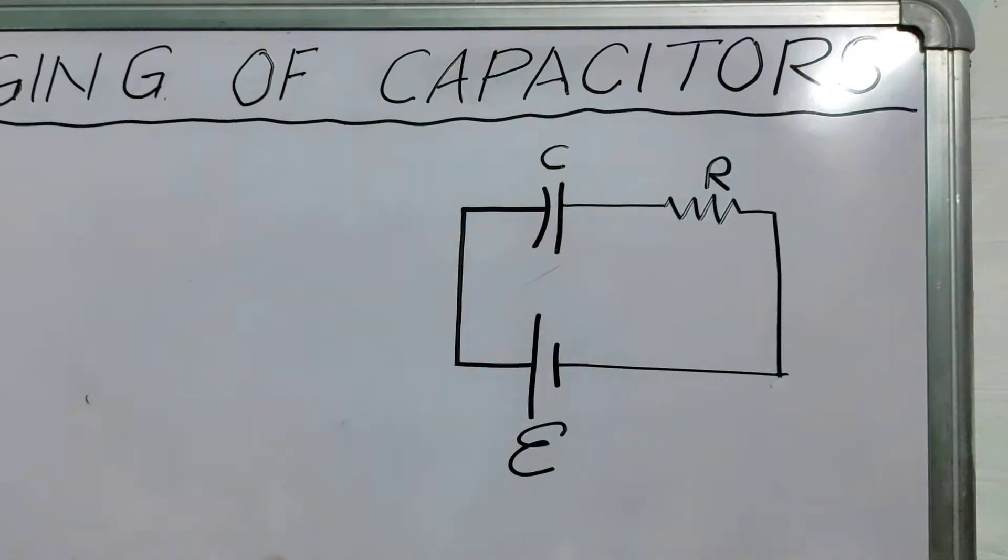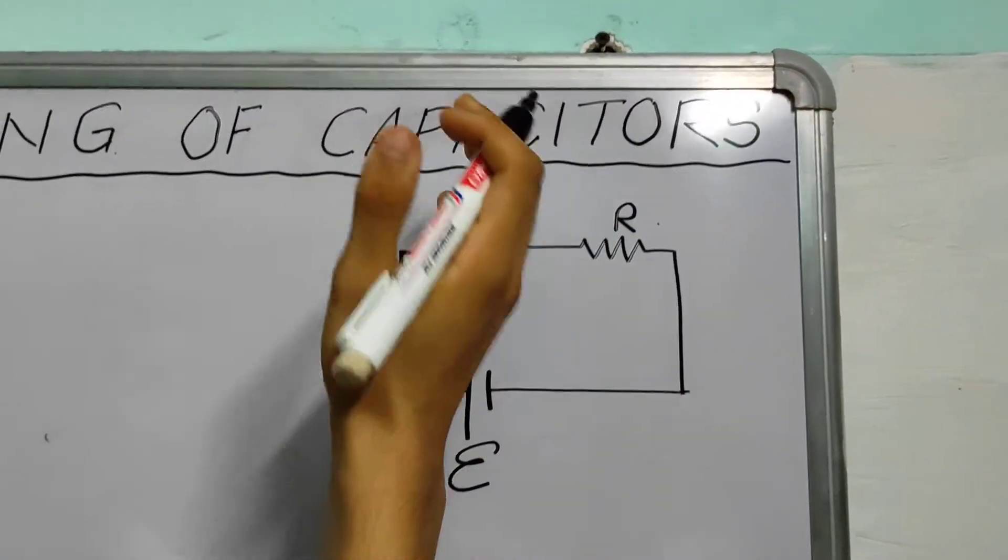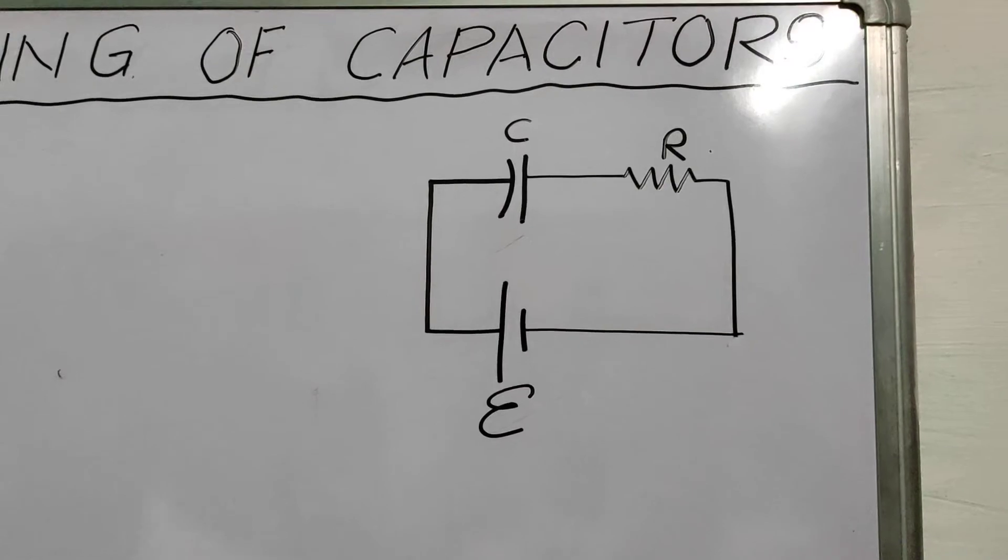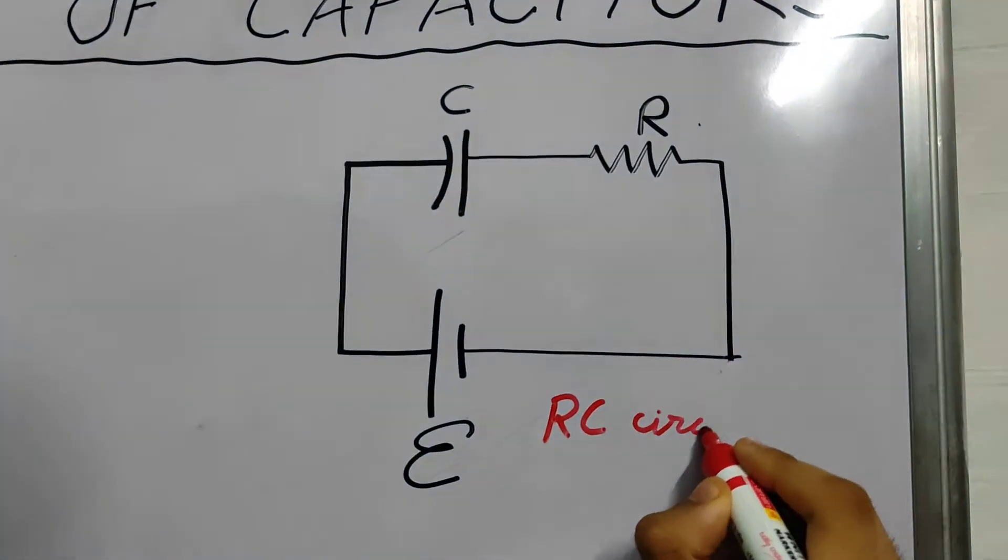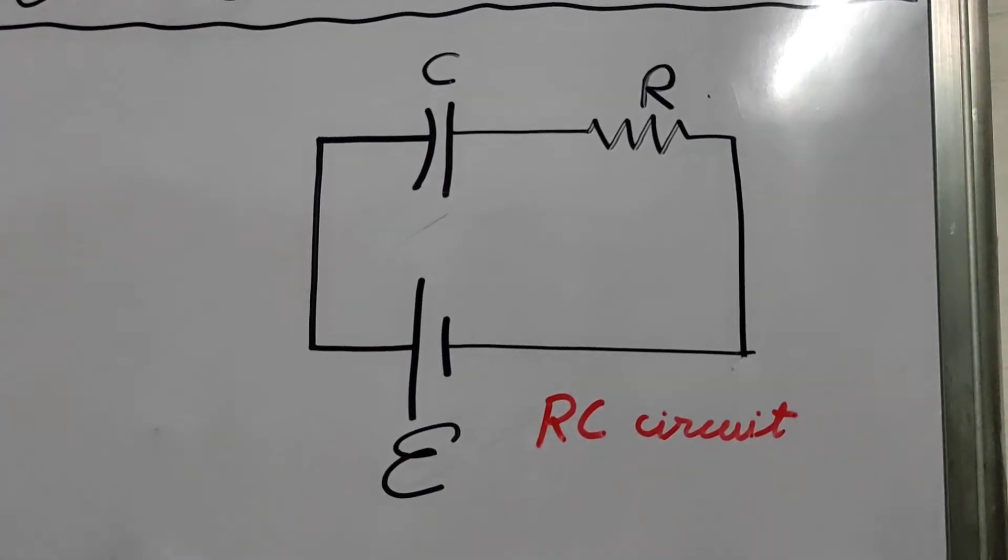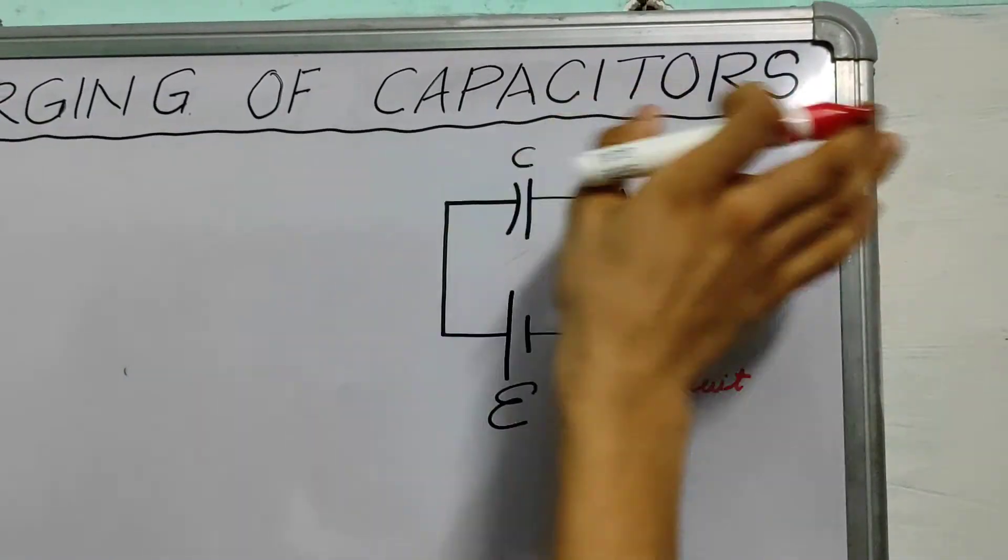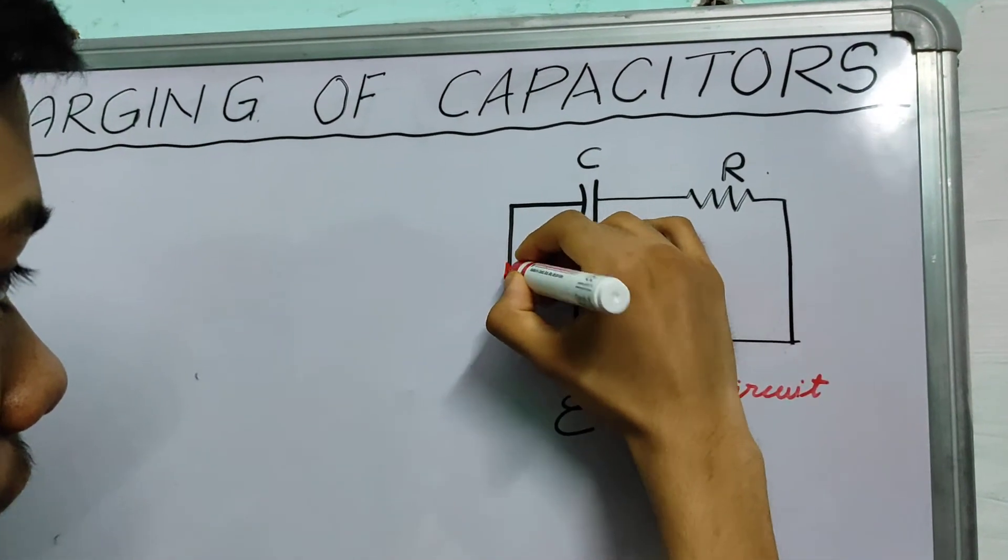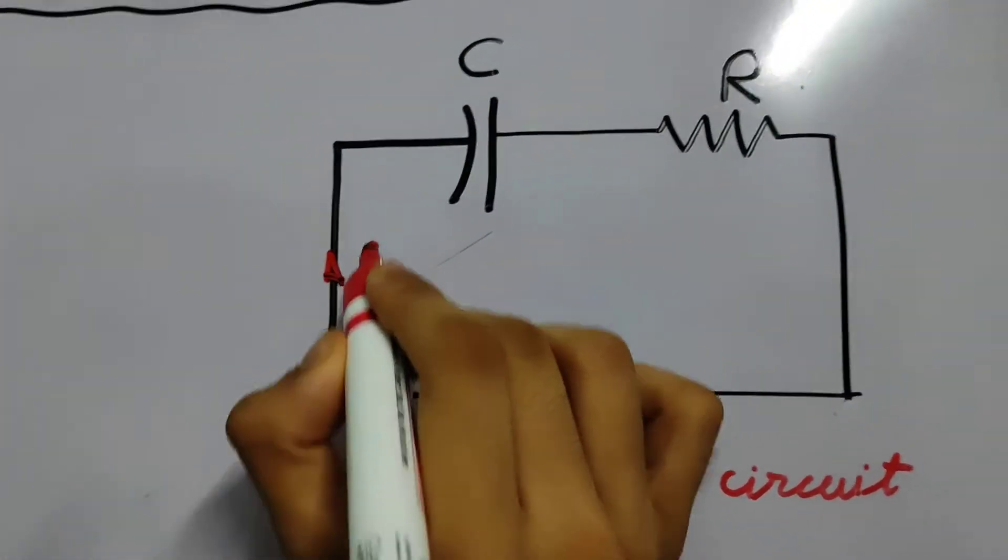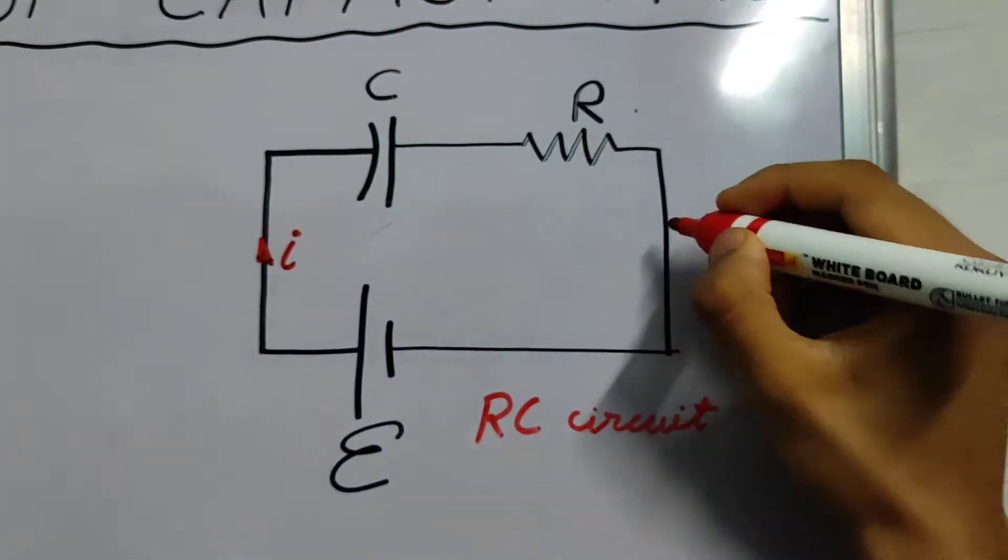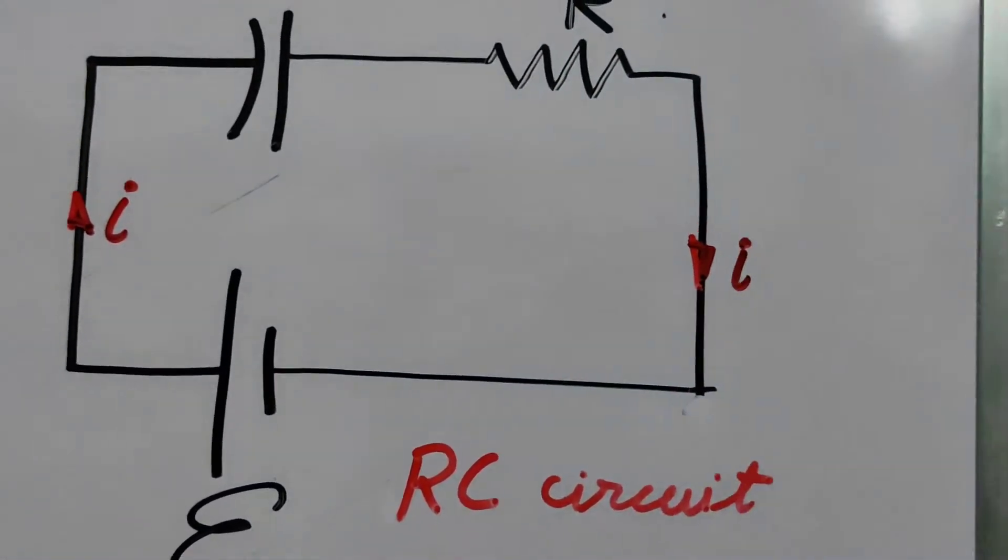That's how an R-C circuit looks like. R stands for resistance, C stands for capacitance. So let me write this down. This is an R-C circuit. And now let us say current will flow through the circuit. Let us say that I current is flowing through the circuit.